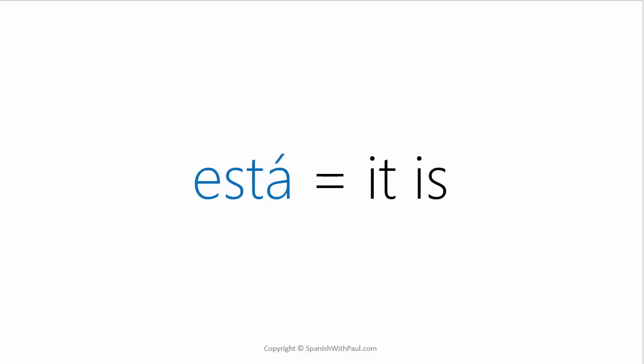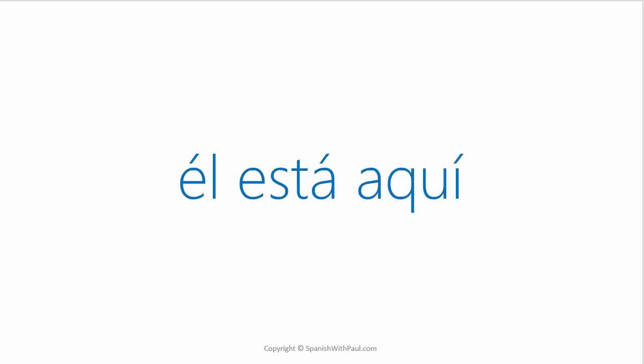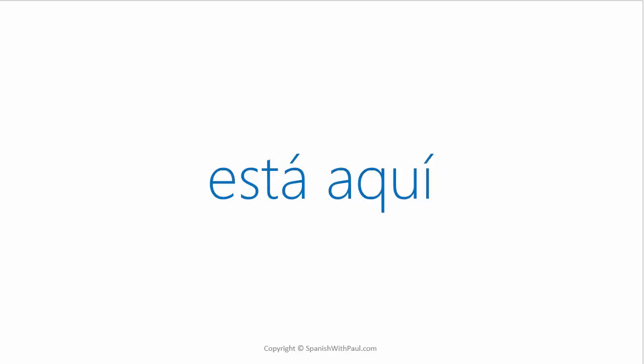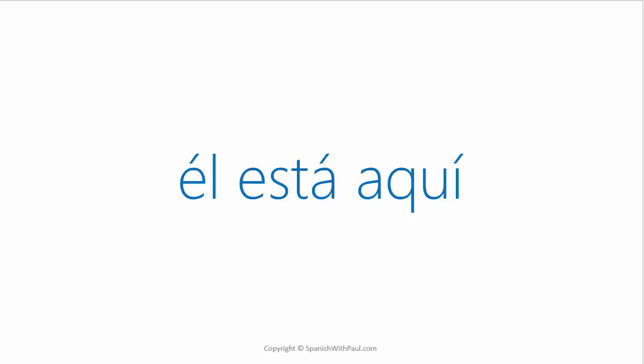Normally it's clear in the context of the conversation which one you're referring to. However, there are also ways to make it explicitly clear. So we could say 'he is here' with 'él está aquí', or 'she is here' with 'ella está aquí'. So let's run through those. How do you say 'it is here'? Está aquí. He is here? Él está aquí.